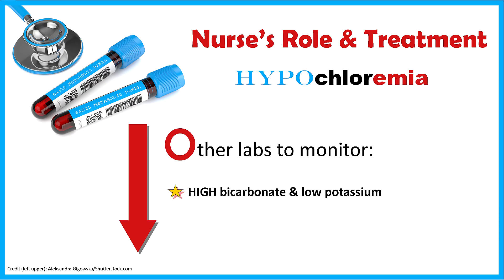O is for other labs to monitor. You want to look at not only the sodium level, but also the bicarb level and the potassium level. A patient with a low chloride level could be presenting with a high bicarb and low potassium, especially if the cause of hypochloremia is metabolic alkalosis. Remember, bicarb and potassium are related to the balance of chloride because they all work together to balance the acid-base system and fluid in the body.